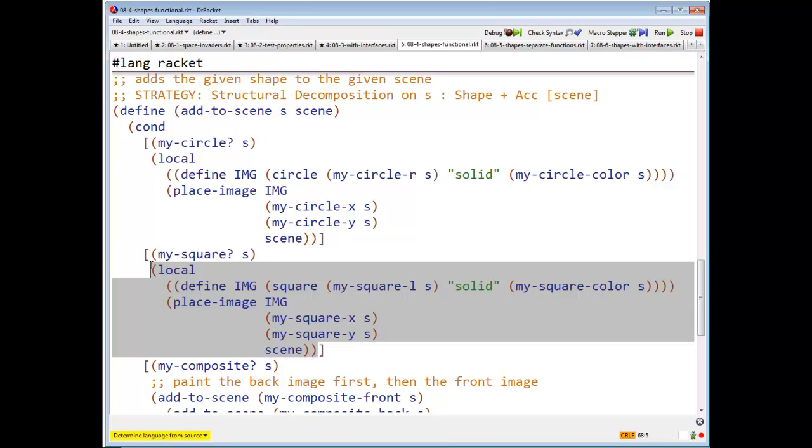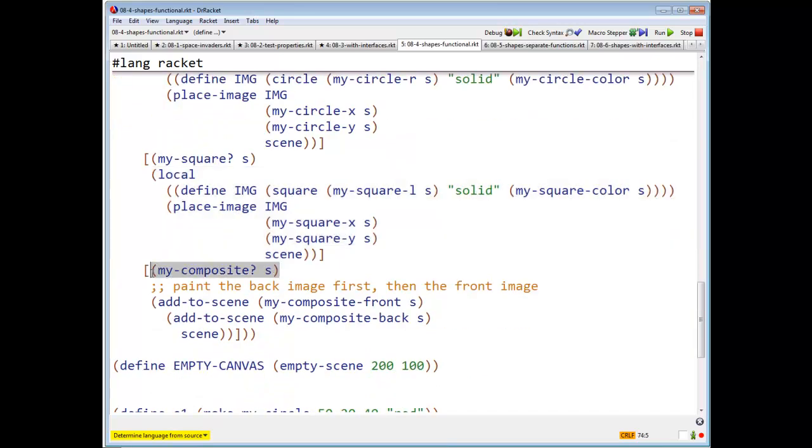Similarly for my square. And now for my composite, what are we going to do? Well, let's see. I want the image on front, the front image to be on top of the back image. So what I'm going to do is I'm going to take my scene. I'm going to paint the back image on it. And then I am going to paint the front image on that.